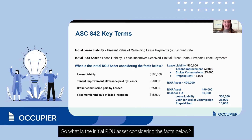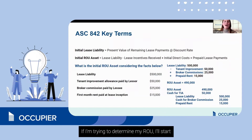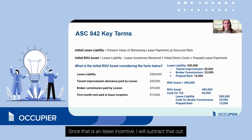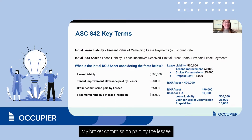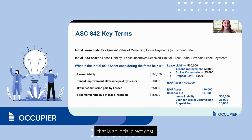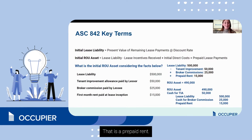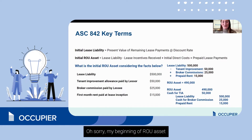To determine the initial right-of-use asset, start with the lease liability of $500,000. Then subtract the tenant improvement allowance paid by the lessor, since that is a lease incentive. The broker commission paid by the lessee is an initial direct cost, so add that. Then add the first month's rent paid at lease inception, which is a prepaid rent. This gives a beginning right-of-use asset balance of $490,000.